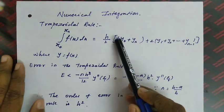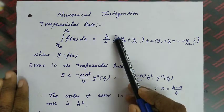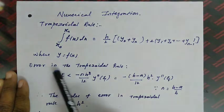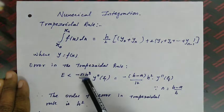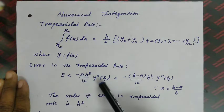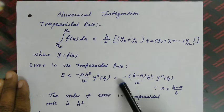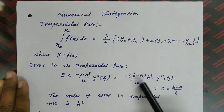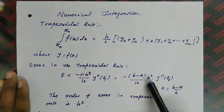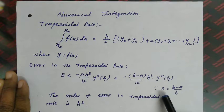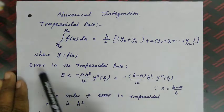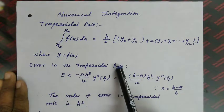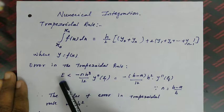The next topic is the error in the trapezoidal rule. The error E is less than −nh³/12 × y''(ζ), which equals −(b−a)/12 × h² × y''(ζ), since n = (b−a)/h.